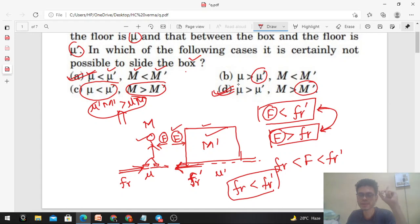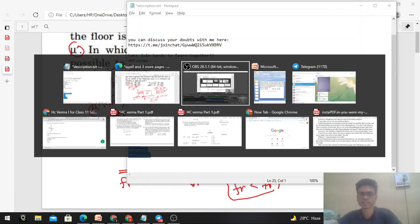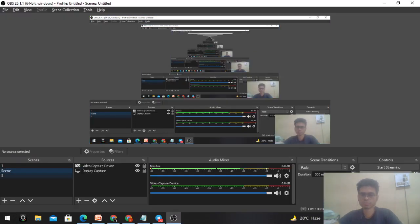Option D is the case where the box will start sliding. So I hope it's clear. If you have any confusion or want to discuss anything, we can discuss on Telegram. Okay guys, keep working hard, best of luck for your programs. Bye.